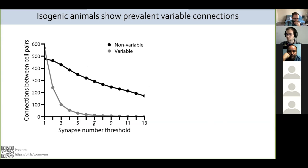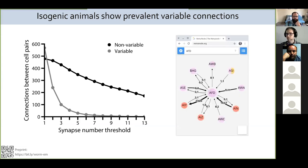For example, if you exclude all connections weaker than five synapses, you remove the majority of variable connections, but there's still about a 10% chance that a connection you're looking at is variable, and you're also excluding a lot of stable connections. Setting an arbitrary threshold can be dangerous. We've developed a small app called NemoNote, available online, where you can see which connections are present across different animals. For example, it shows the synapse number for our two adult datasets for a given neuron — some connections are only present in one animal. We plan to add other people's data so all available connectomes can be compared.